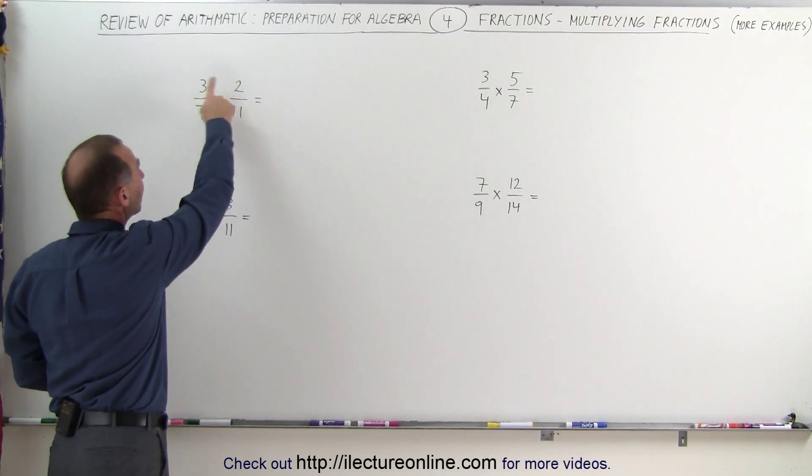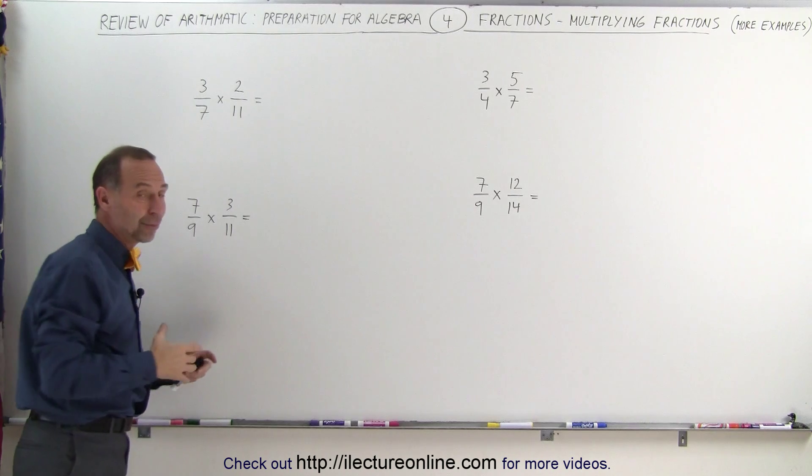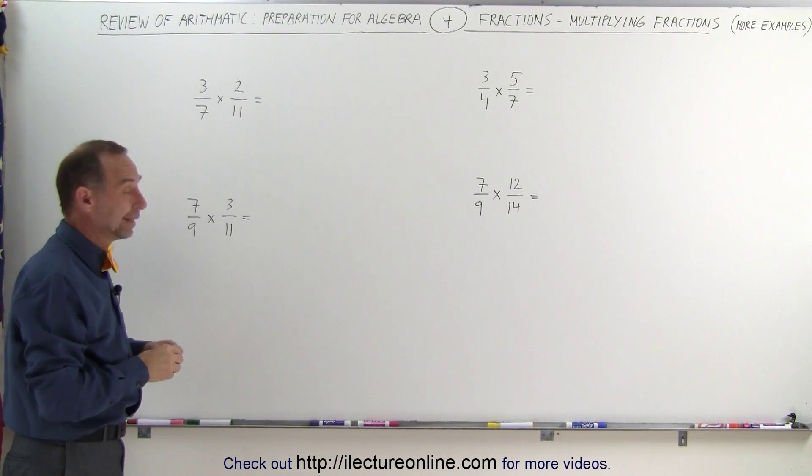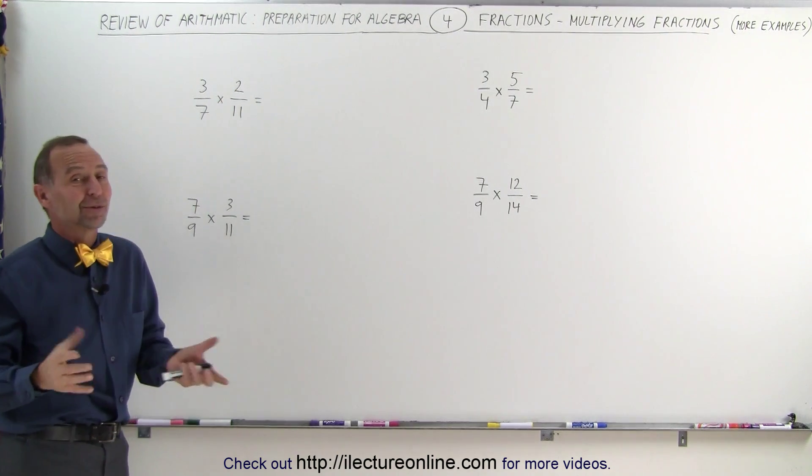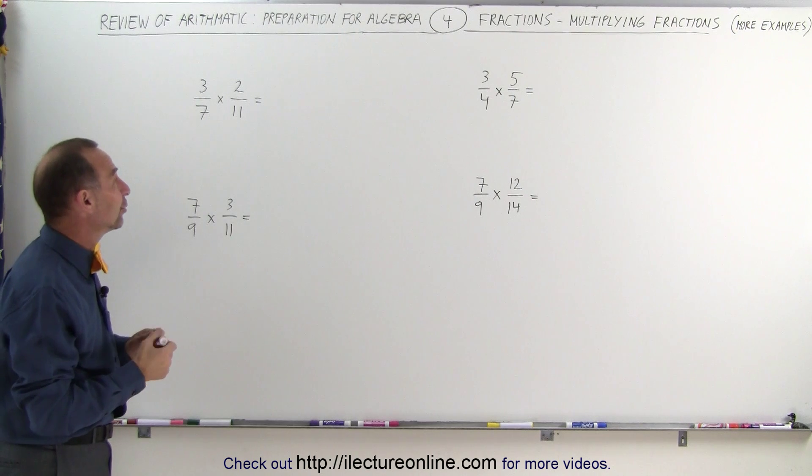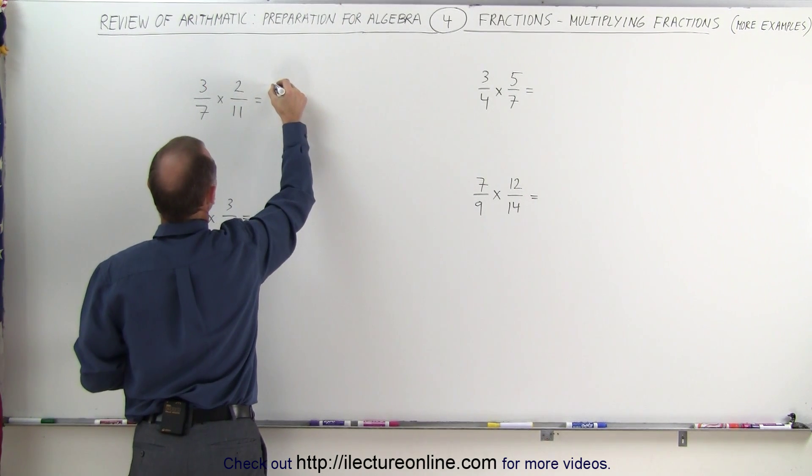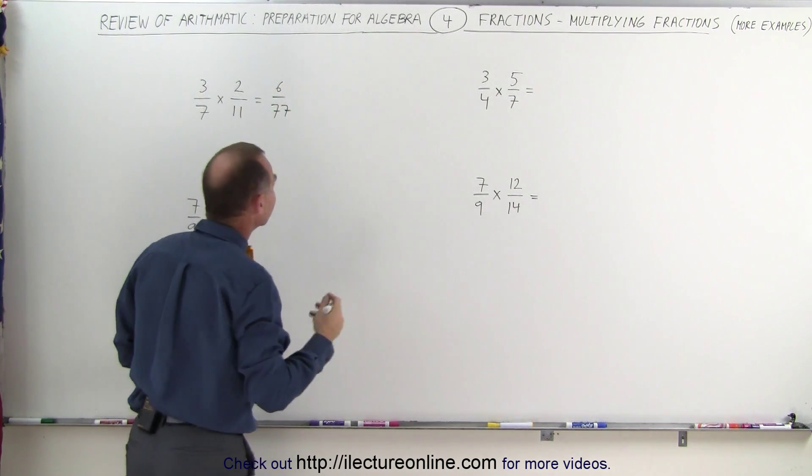Notice though here that on these two fractions, the numbers 3, 7, and 11 are all prime numbers, meaning they can only be divided by themselves and by 1. That doesn't leave you a lot of chance. And by the way, 2 is a prime number as well. They're all prime numbers, they're all different, no chance of reducing, and we continue with saying 3 times 2 is equal to 6, and 7 times 11 is equal to 77, and we're done.